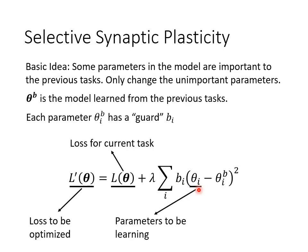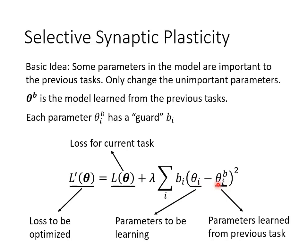On a new task, instead of minimizing the original loss L directly — which would cause catastrophic forgetting — we use a new loss function L'. L' equals the original loss L plus an additional term: the sum over all i of bi times (θi − θbi)². This term makes θi stay close to θbi, where θbi is the parameter learned from the previous task. If bi is large, θi must stay very close to θbi; if bi is small, it doesn't need to be close.